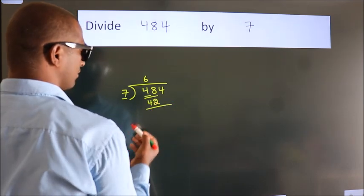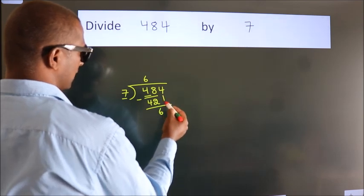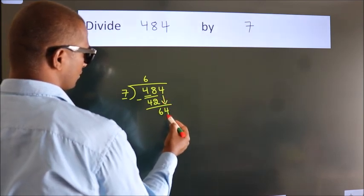Now, we should subtract. We get 6. After this, bring down the beside number. So 4 down. So 64.